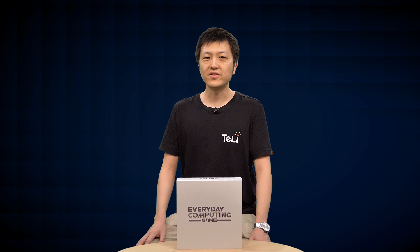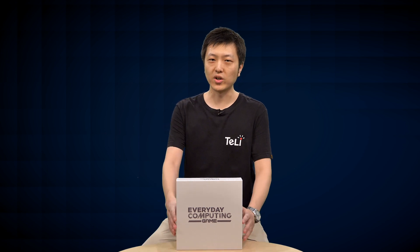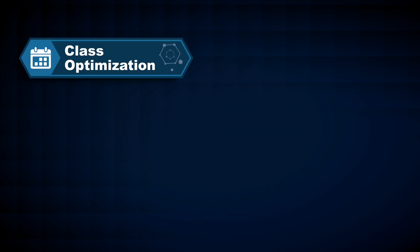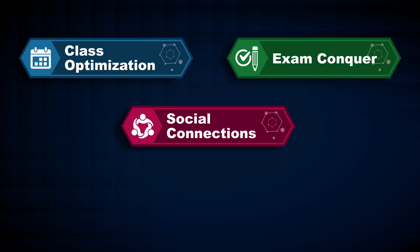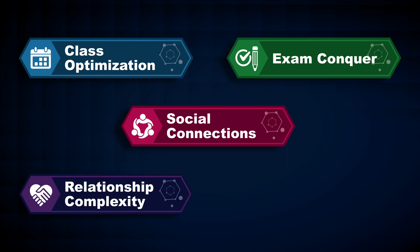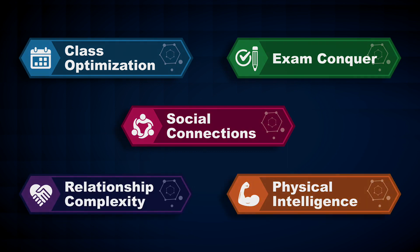Hi, I'm Xiang Yu. In this video, we are going to learn how to play the board game Everyday Computing. In this game, you are just a freshman coming to the colorful university life. In the next three years, you need to make a balance among five different dimensions of life: class optimization, exam conquer, social connections, relationship complexity, and physical intelligence.